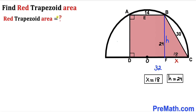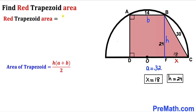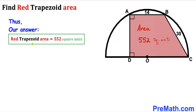Now let's calculate the area of the red shaded trapezoid. Using the formula Area = H × (A + B) / 2, with base A = 32, base B = 14, and height H = 24: Area = (1/2) × 24 × (32 + 14) = (1/2) × 24 × 46 = 552 square units.